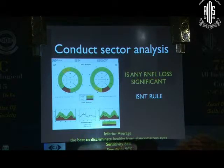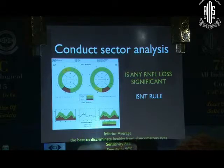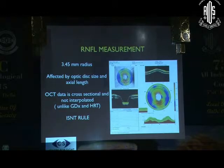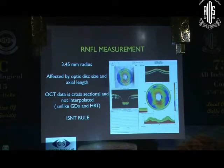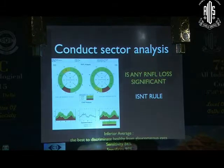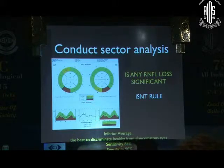Look out at the profile — sometimes a head tilt may cause a very aberrant signal profile. Typically you will have a double hump pattern. Remember that disc size and axial length affect measurements, and in discs that fall outside the normal range you may not put much value on the comparison with normals. Do look out for the ISN'T rule, and remember that an inferior average is the best way to discriminate healthy from glaucomatous eyes.